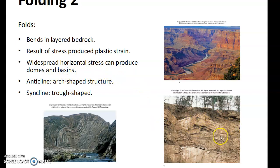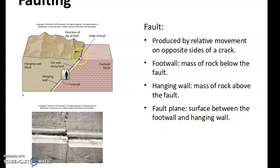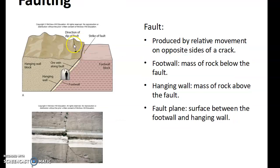A fault is produced by relative movement on opposite sides of a crack. A foot wall is the massive rock below the fault, and a hanging wall is the massive rock above the fault. The fault plane is the surface between the foot wall and the hanging wall. Looking at this diagram, the hanging rock is up here, and the foot wall is down here.